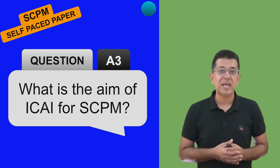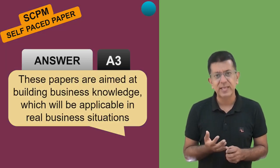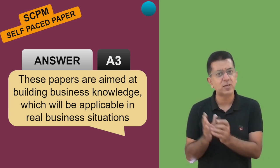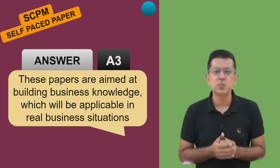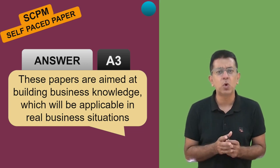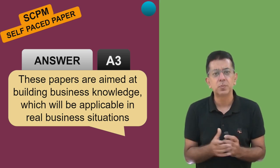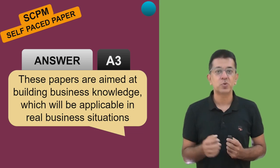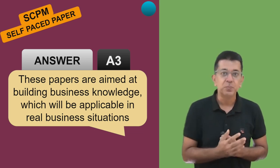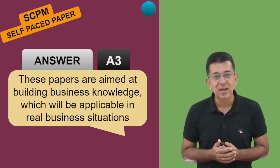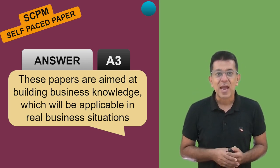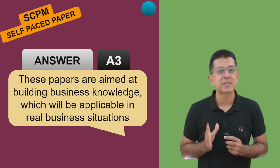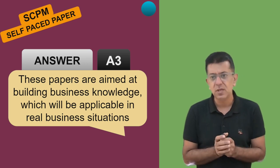What is the aim of ICAI for this paper SCPM? Most of your papers like FR, DT, IDT are rule-based papers - law has told something, you try to follow it. I think one day will come under automation mode whereby a CA will not be able to do much except providing expert knowledge, but most procedures will be done by softwares as is now being done for GST. But business keeps changing, and this subject teaches you business. The other name of business is uncertainty, and that uncertainty has to be curbed down with proper knowledge. This subject teaches you all the business fundamentals you require. It is not a rule-based paper; it is basically a common sense kind of paper.